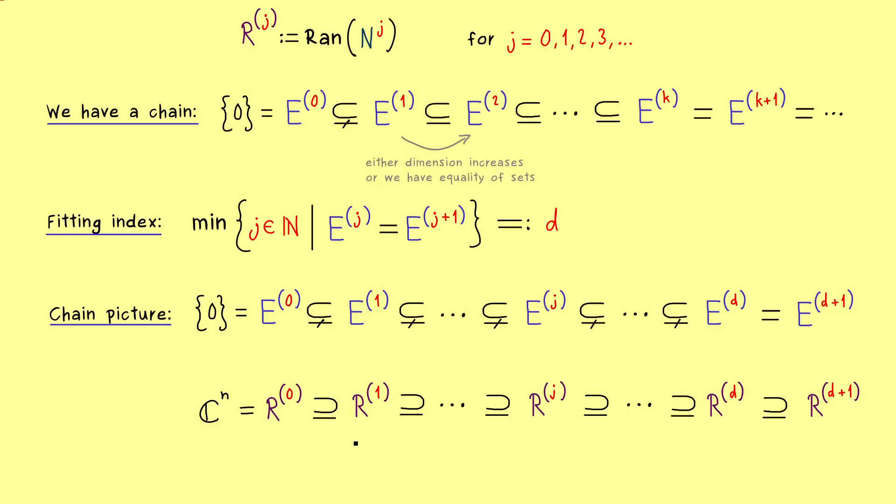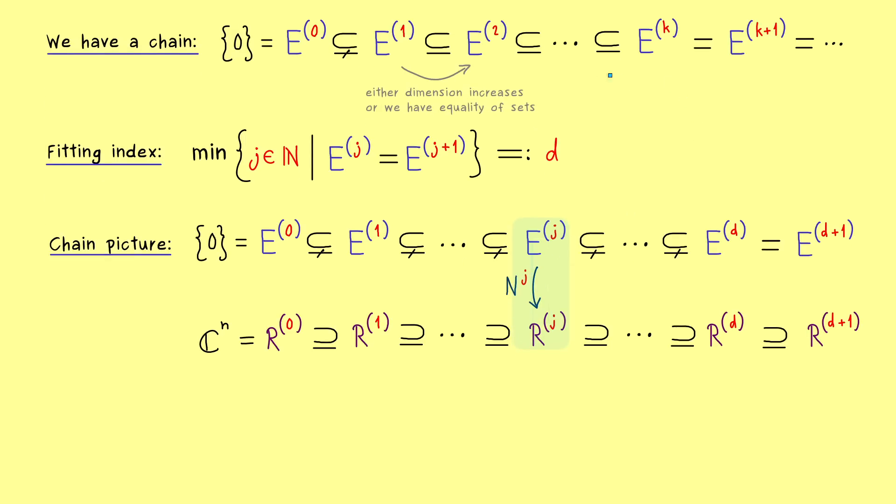The first question would be, do we also have the proper subsets and the equality here in the picture for the ranges as well? It's correct but not immediately clear, because we have to put in our rank-nullity theorem. This means we can use our matrix N^j as a mapping from the top level to the lower level. We can do that no matter which index we consider. Let's apply the rank-nullity theorem to any power of our matrix N. Obviously, the rank is given by the dimension of the range, and the nullity is given by the dimension of our E-spaces. If we add both dimensions, we get the dimension of the space we put in, which is C^n. We can call the index j or k, it does not matter. The important thing is it holds for any index we can consider.